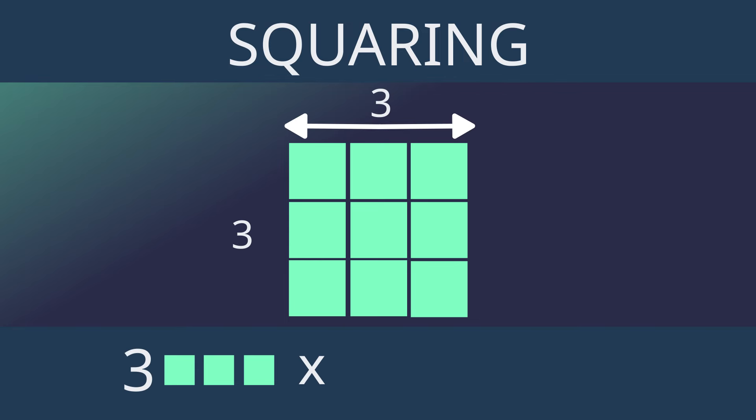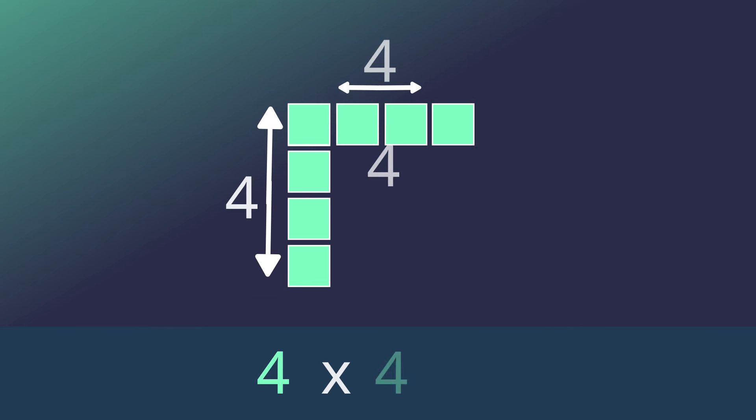Therefore, squaring a number means multiplying a number by itself. For example, if we take the number 4 and square it, we multiply 4 by 4.